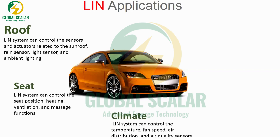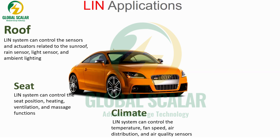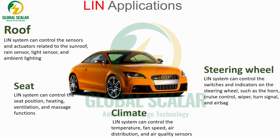For climate control, LIN is used for fan speed control and air flow management inside the car to maintain air quality. For the steering wheel, functionalities like cruise control, wipers, turn signals, and airbags are configured with LIN protocol, since it is a single-wire communication where data can be transmitted from one end.